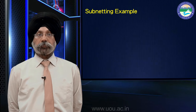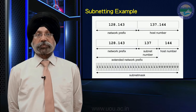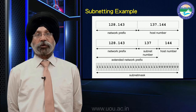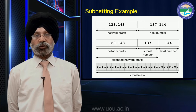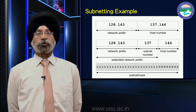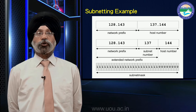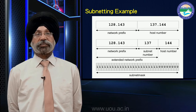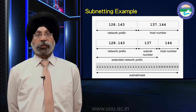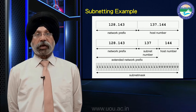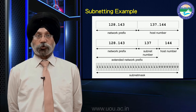Now let's take a subnetting example. We have taken the IP address 128.143.137.144. Since this is a class B address, the network prefix will be slash 16, meaning the first two octets in the subnet mask would be 1s and the last two octets would be 0s.